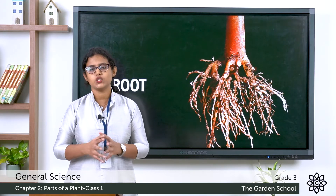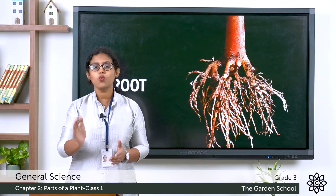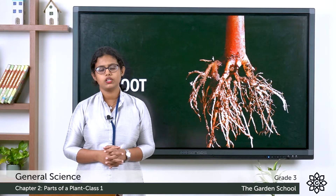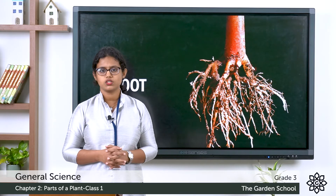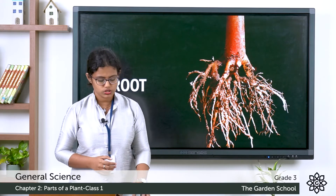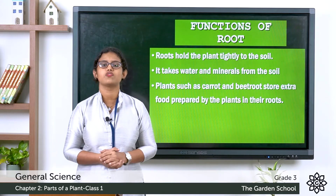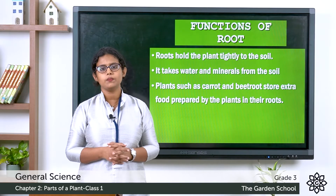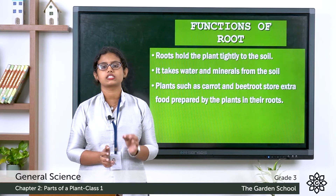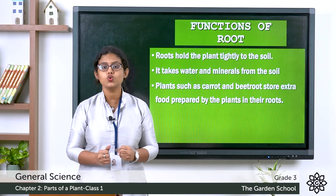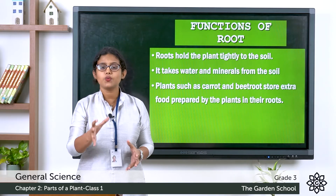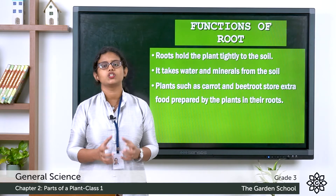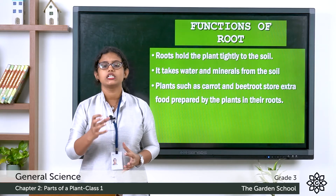A plant has many roots, and most of them grow under the soil. The first and foremost function of a root is it holds the plant tightly to the soil. That is why a plant is not washed away at the time of heavy rain, and it is not easy to pull a plant from the soil — because the root holds the plant tightly to the soil.